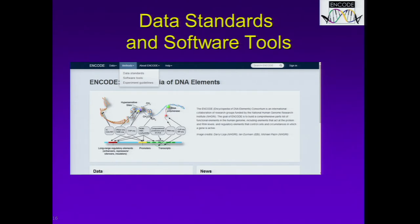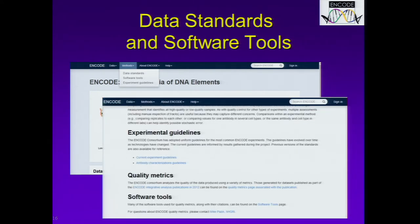ENCODE has developed a number of data standards and software tools. If you click under Methods, you can find a lot of this information. There are experimental guidelines including data standards for many of the common assays used in ENCODE. We can find detailed information about quality metrics as well as software tools that were used to create the resource, including tools that were created by ENCODE or used by other groups.